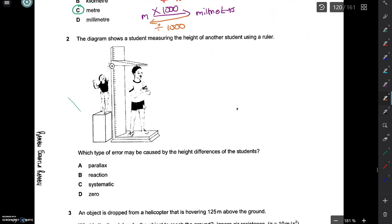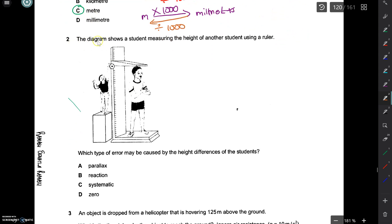Part 2 says, the diagram shows a student measuring the height of another student using a ruler. Which type of error may be caused by the height differences of the students? Well, this is a parallax error.